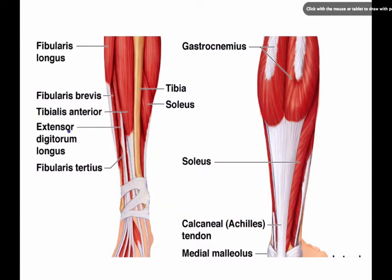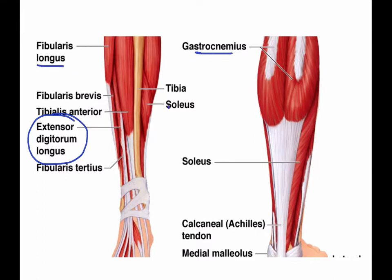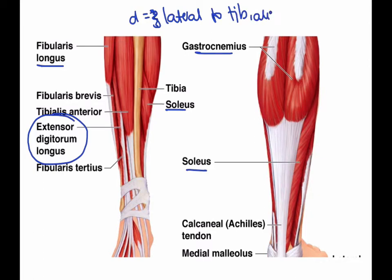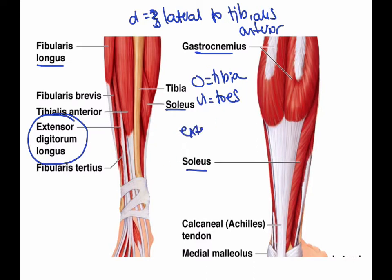Also on the anterior side is the extensor digitorum longus, which is also a movement at the foot muscle. All the remaining muscles are going to be movement at the foot. The extensor digitorum longus is lateral to the tibialis anterior. The origin is the tibia and the insertion is the toes. This one helps to extend the toes.